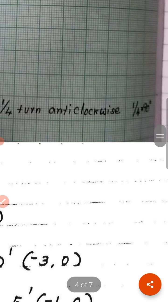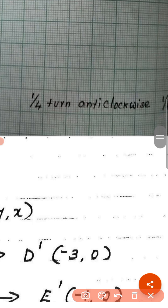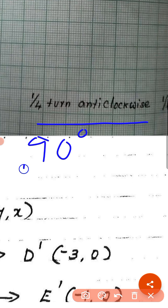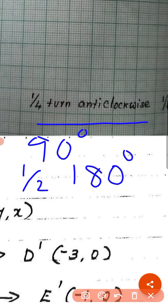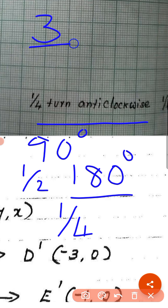Children, in this figure it is written as quarter turn anticlockwise. Quarter turn means 90 degrees. Half turn means 180 degrees. Full turn means complete rotation, that is 360 degrees. Three quarters — three-fourths — means 270 degrees.